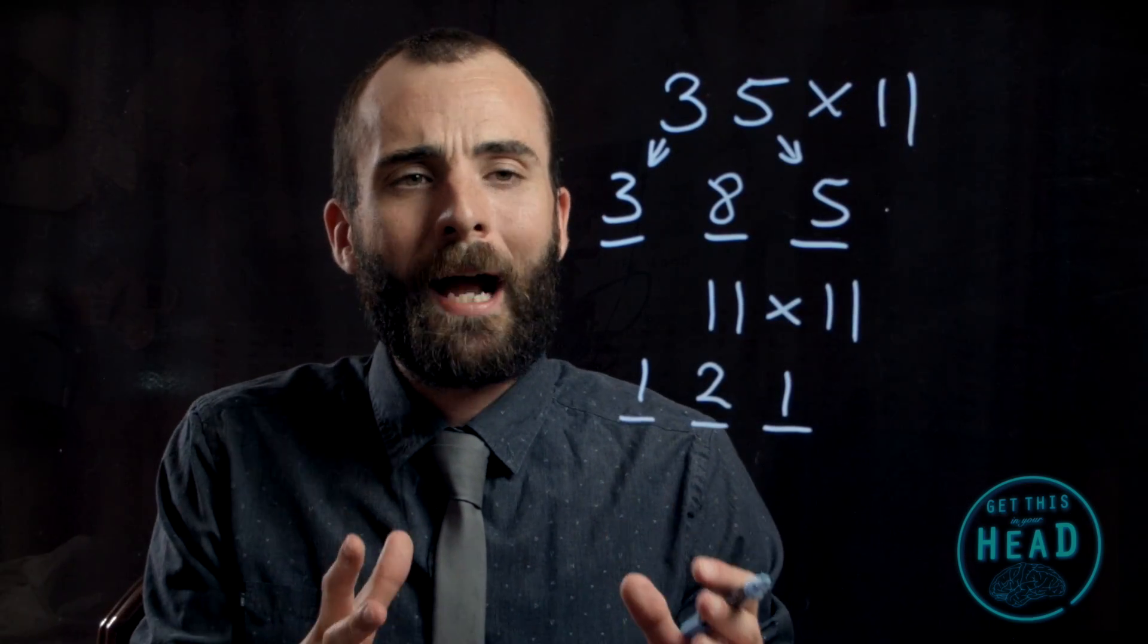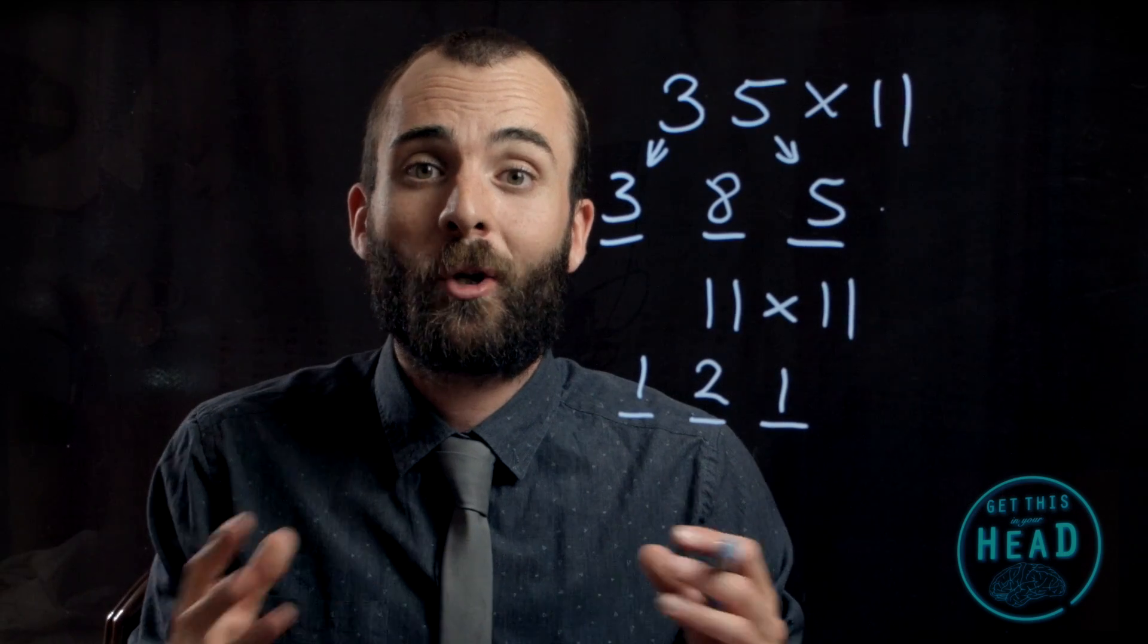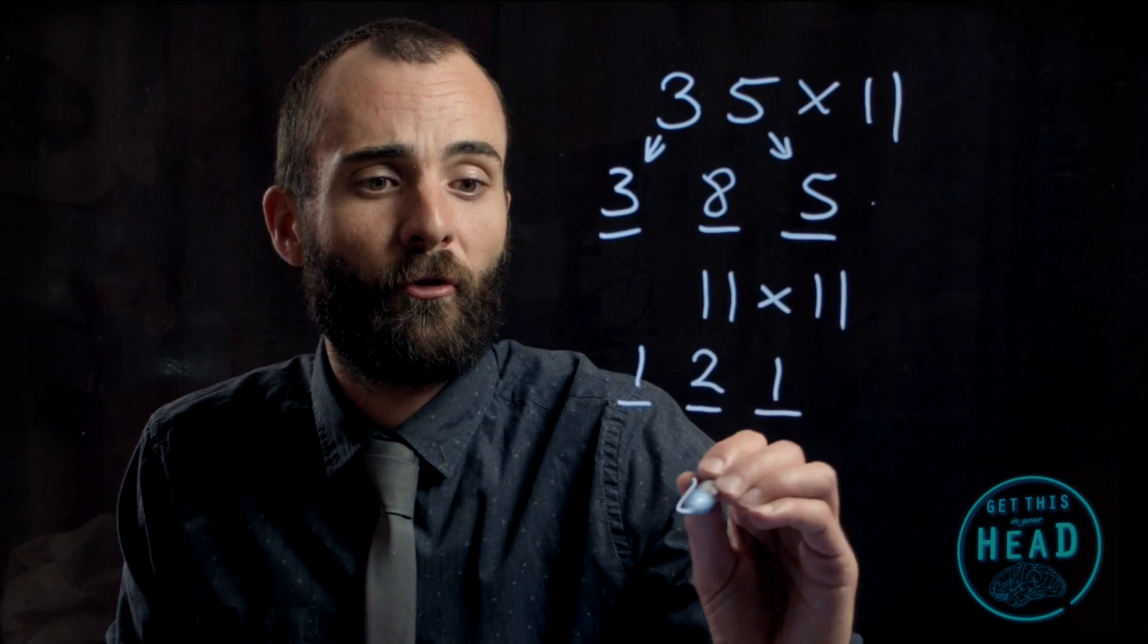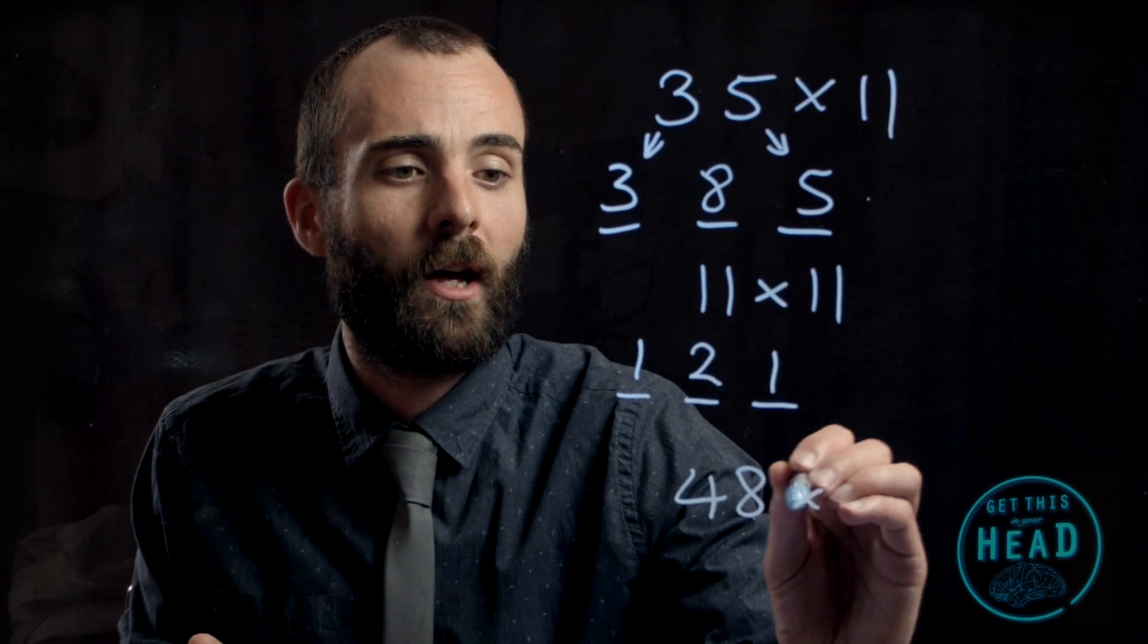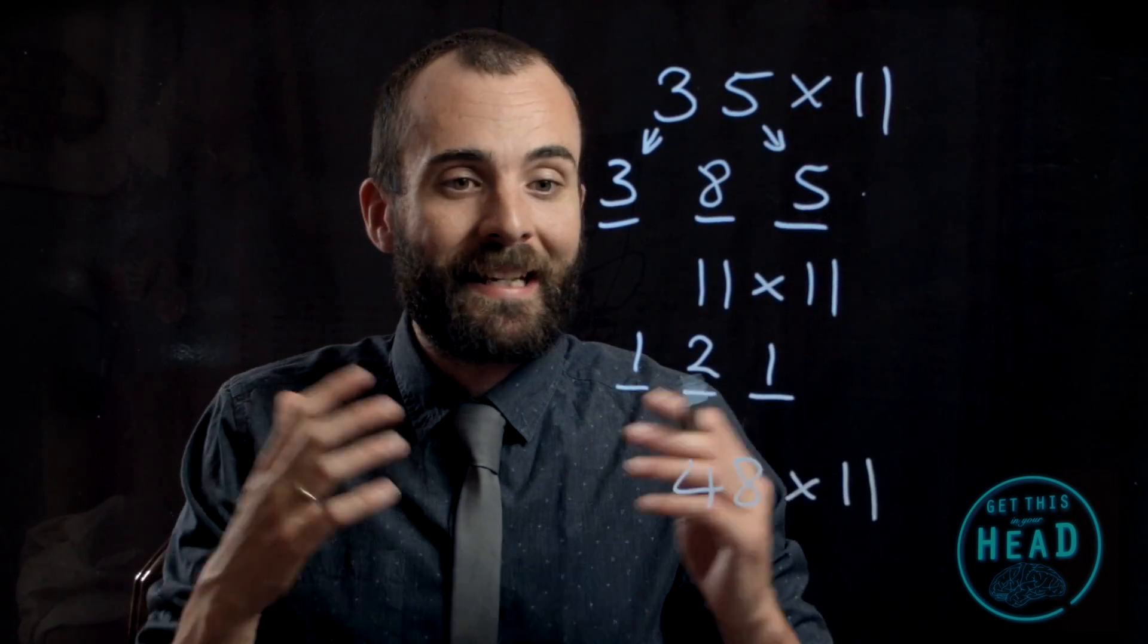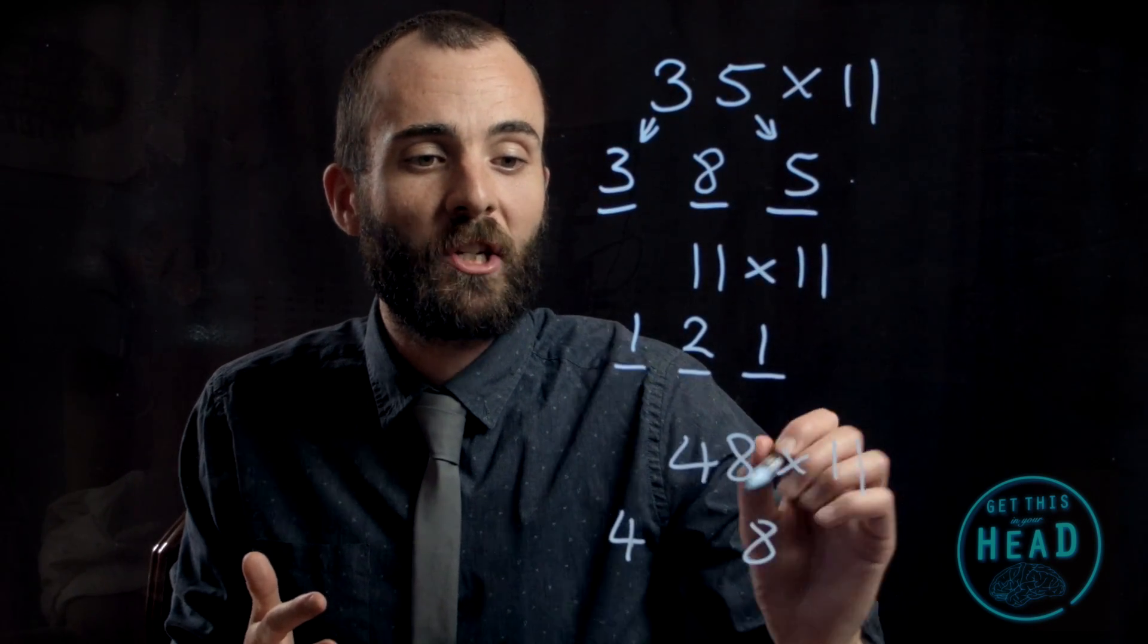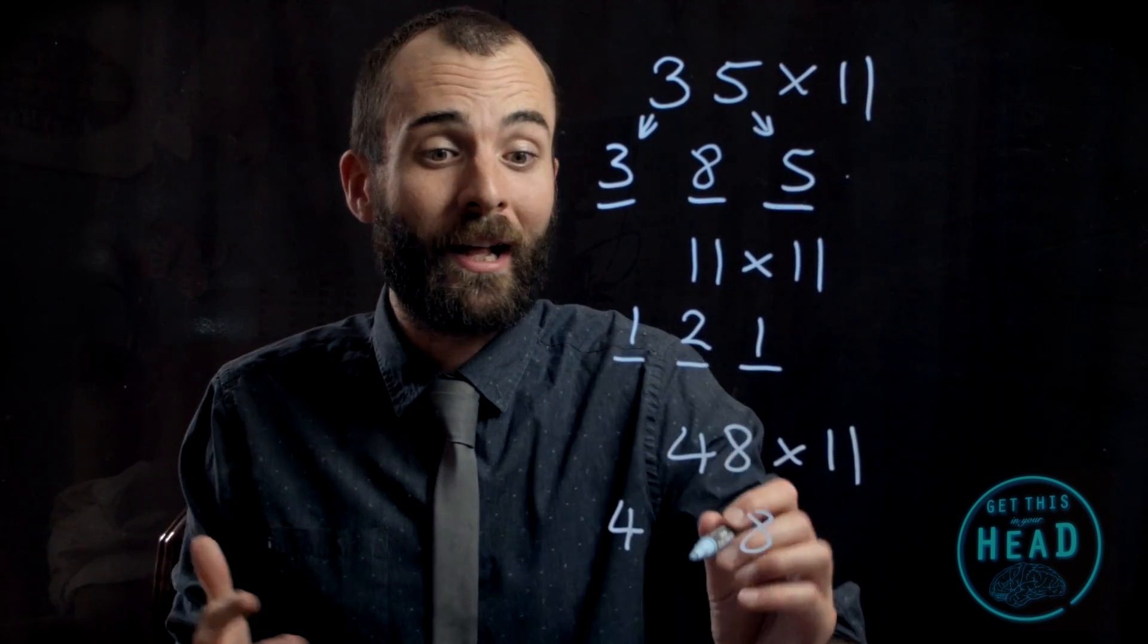Now you might be thinking that's all well and good, but what happens when the numbers add up to something greater than 10? Well, let's look at an example like that. Let's do 48 multiplied by 11. In exactly the same way, we can move the 4 into the first position, the 8 into the last position, and we add them together to get 12.